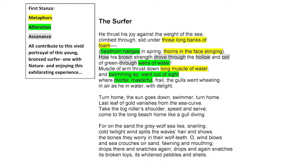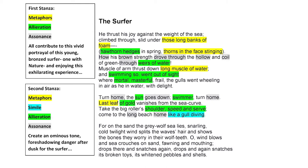I've highlighted 'swimming so went out of sight' as alliteration, but the repetition of the S sound is also called sibilance. This shows how humanity is really tiny in the midst of an endless sea. Despite the surfer's delight, Wright already foreshadows that change is coming with the lexical choices 'mortal' and 'frail.' In the end, we are weak and mortal — only specks against the power and the vastness of the sea.